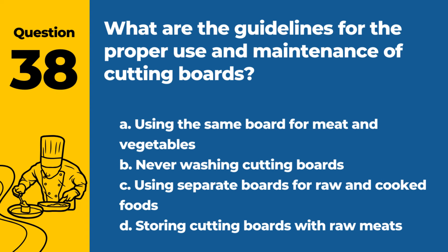Question 38. What are the guidelines for the proper use and maintenance of cutting boards? a. Using the same board for meat and vegetables. b. Never washing cutting boards. c. Using separate boards for raw and cooked foods. d. Storing cutting boards with raw meats. Answer: c. Using separate boards for raw and cooked foods. This prevents cross-contamination.